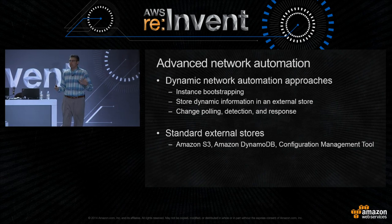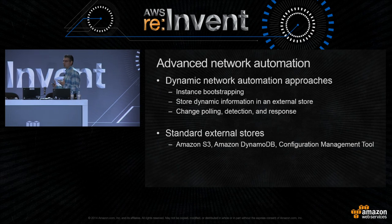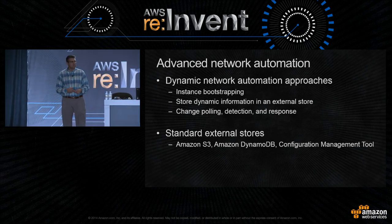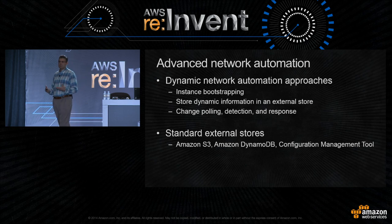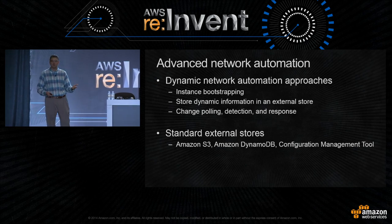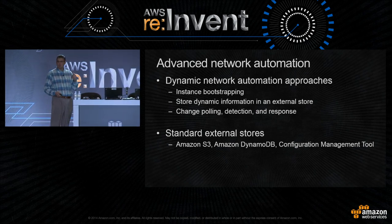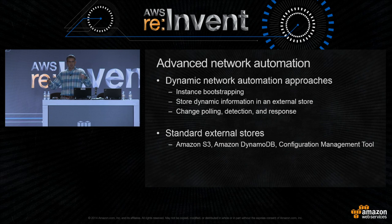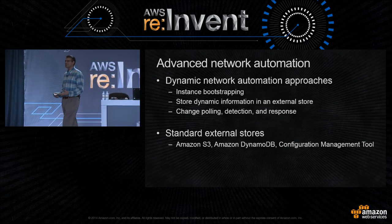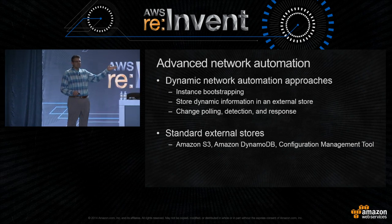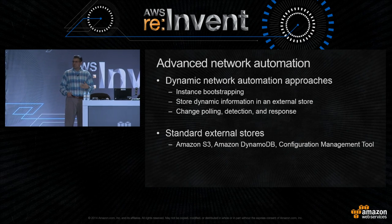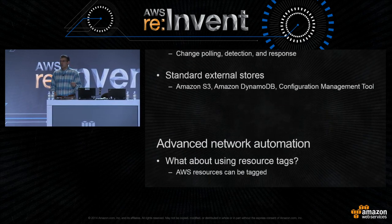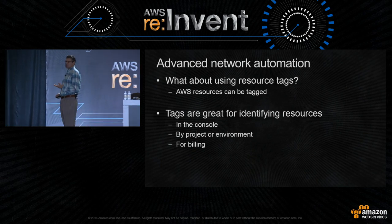I don't consider myself a developer — more of a hack in the garden. What I'm trying to describe with this automation is that you don't have to be a hardcore developer to do simple automation. What about using resource tags as your external store? AWS resources can be tagged, and most of us are already using tags today for identifying things in the console — naming instances, VPCs, route tables, or breaking down bills by project. Wouldn't it be cool if you could tag your resources and say, 'this is a NATed subnet' or 'this subnet needs to be NATed by a specific availability zone'?